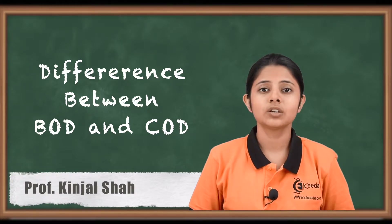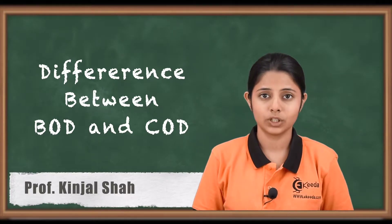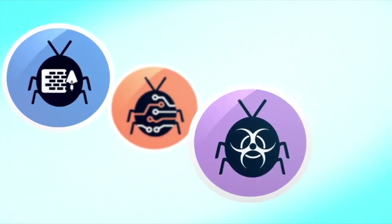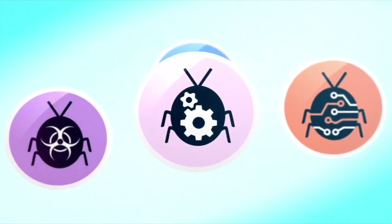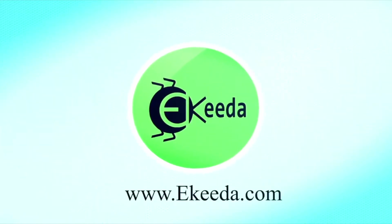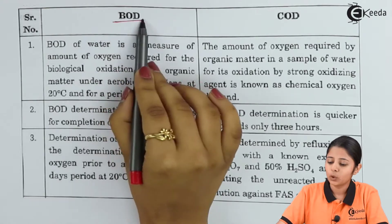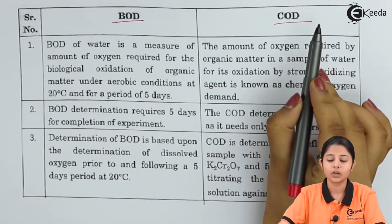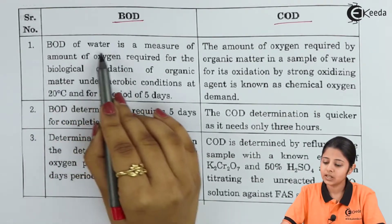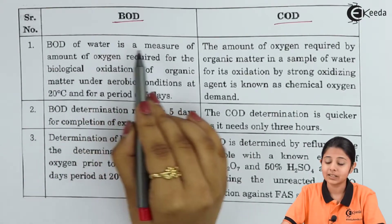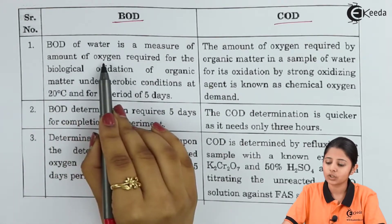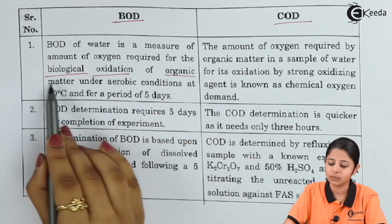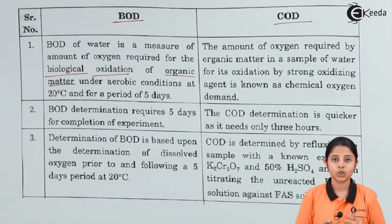In today's session, we are going to differentiate both BOD and COD together. BOD is Biochemical Oxygen Demand and COD is Chemical Oxygen Demand. BOD is a measure of the amount of oxygen required for the biological oxidation of organic matter. Now what do we mean by biological oxidation?